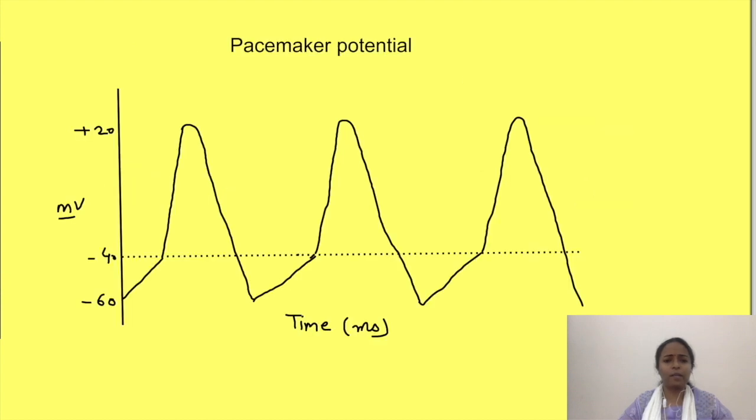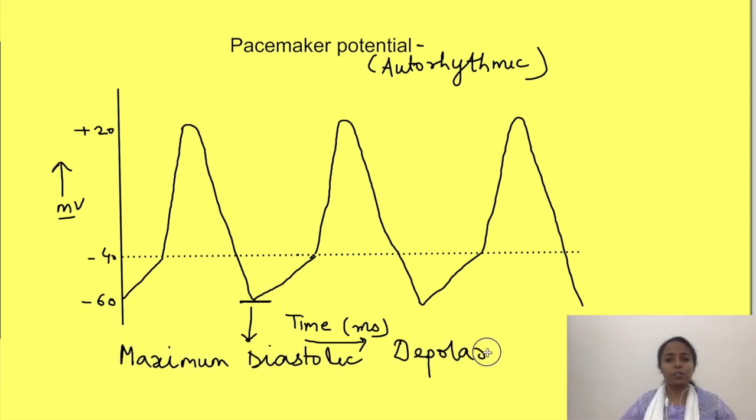So just a quick recap of pacemaker potential. We have discussed it in another video also. This graph is showing pacemaker potential. This is the potential of the auto-rhythmic cells, i.e. SA node and AV node. X axis represents time in milliseconds while Y axis represents voltage in millivolt. The lowest voltage is known as maximum diastolic depolarization.